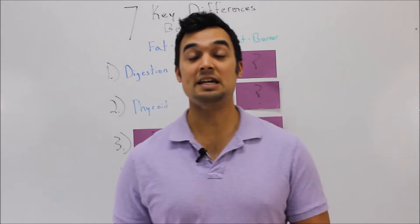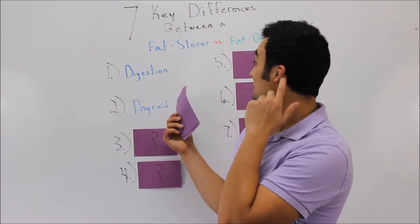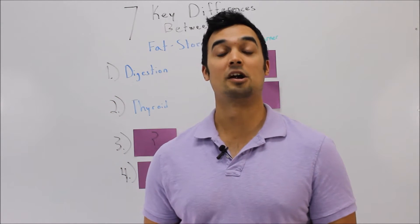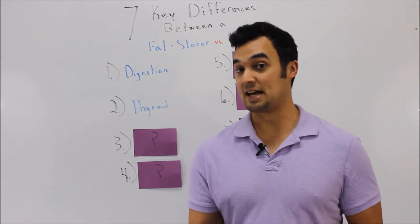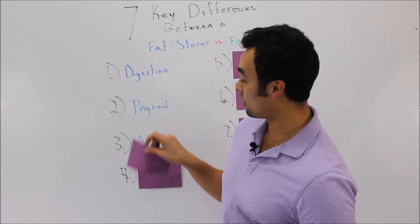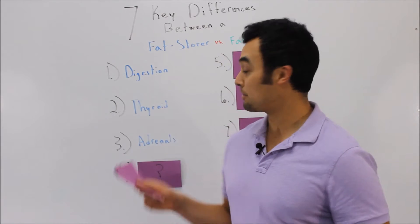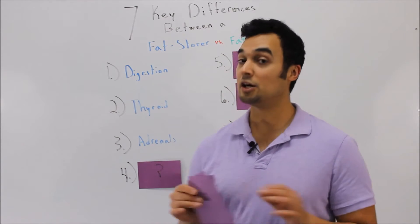Somebody with a fat-storing body tends to have a slow thyroid function. Somebody that is a fat-burning body has a high thyroid, meaning their inactive thyroid is being converted to active thyroid. And, in fact, we're going to go ahead and go to number 3 to talk a little bit more about hormones. The key difference number 3 between a fat store and a fat burner is calm adrenal glands.